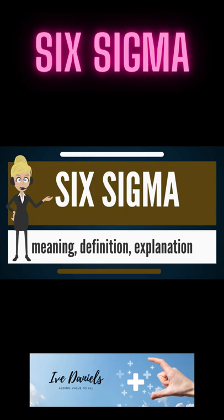Six Sigma was registered June 11, 1991 as U.S. Service Mark 1,647,704. In 2005, Motorola attributed over 17 billion U.S. dollars in savings to Six Sigma. Other early adopters of Six Sigma include Honeywell and General Electric, where Jack Welch introduced the method. By the late 1990s, about two-thirds of the Fortune 500 organizations had begun Six Sigma initiatives with the aim of reducing costs and improving quality.